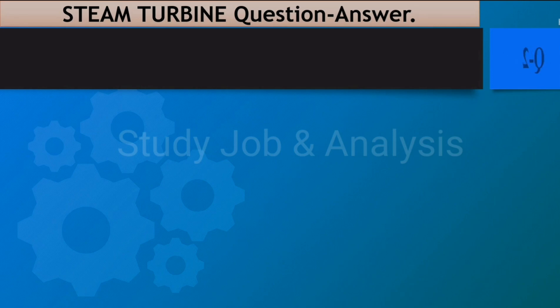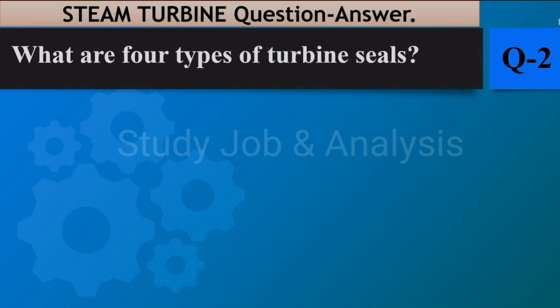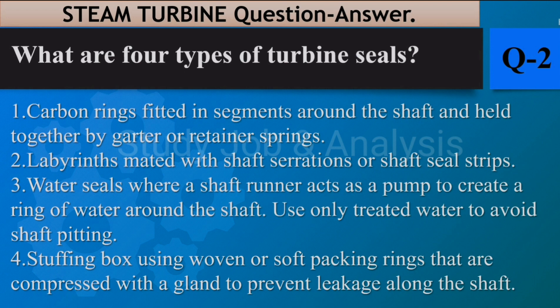Question number two: What are four types of turbine seals? Answer: One, carbon rings fitted in segments around the shaft and held together by garter or retainer springs. Two, labyrinths mated with shaft serrations or shaft seal strips. Three, water seals where a shaft runner acts as a pump to create a ring of water around the shaft — use only treated water to avoid shaft pitting. Four, stuffing box using woven or soft packing rings compressed with a gland to prevent leakage along the shaft.